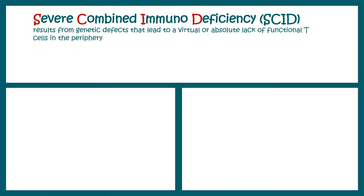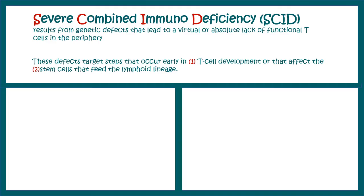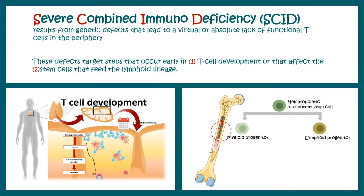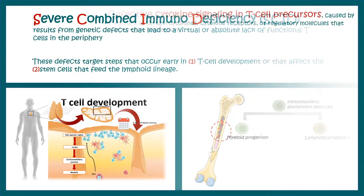Severe combined immunodeficiency results from genetic defects that lead to a virtual or absolute lack of T-cells in the periphery. Generally, T-cells are circulating in the periphery, but in this disease circulating T-cells are literally absent. These defects, which occur at the genetic level, target very early stages of T-cell development or affect the stem cells that feed the lymphoid lineage — these are the two key defects pronounced in SCID.